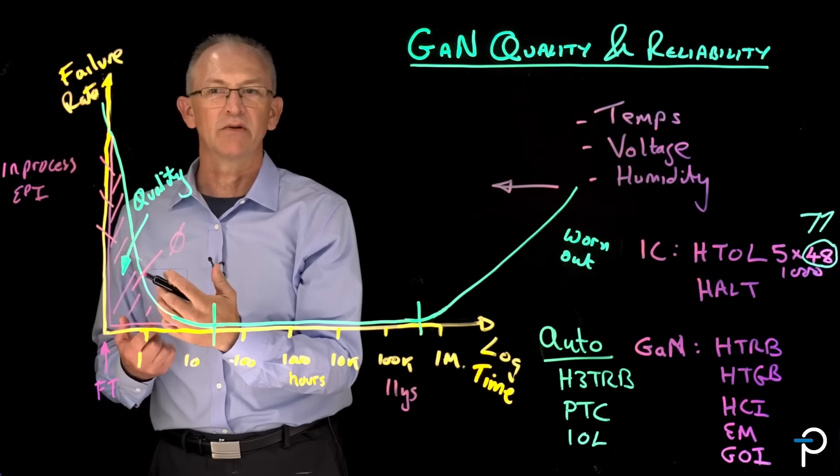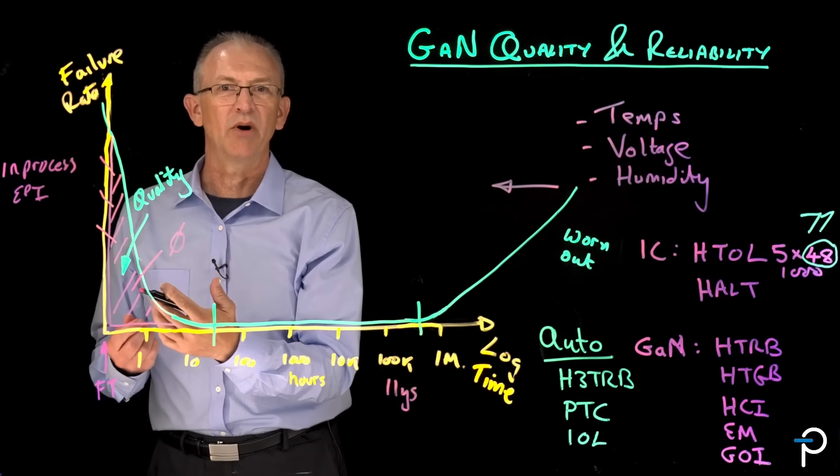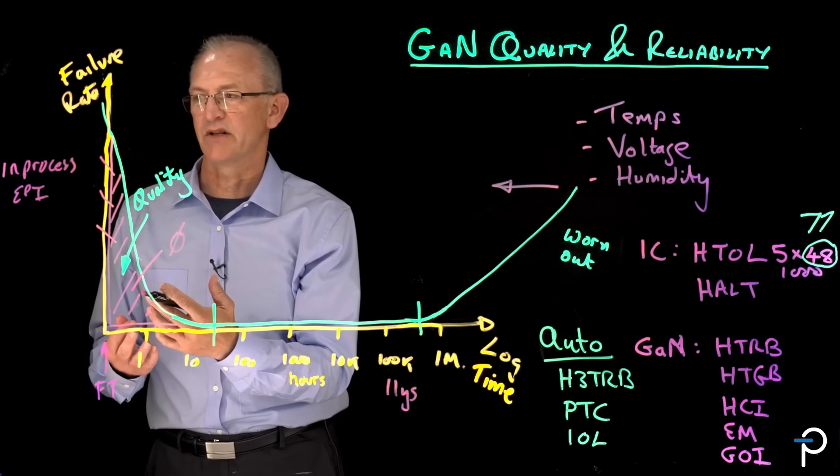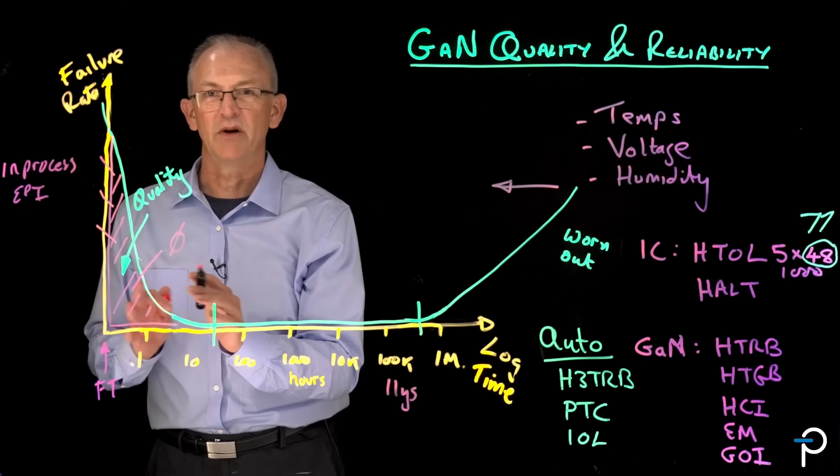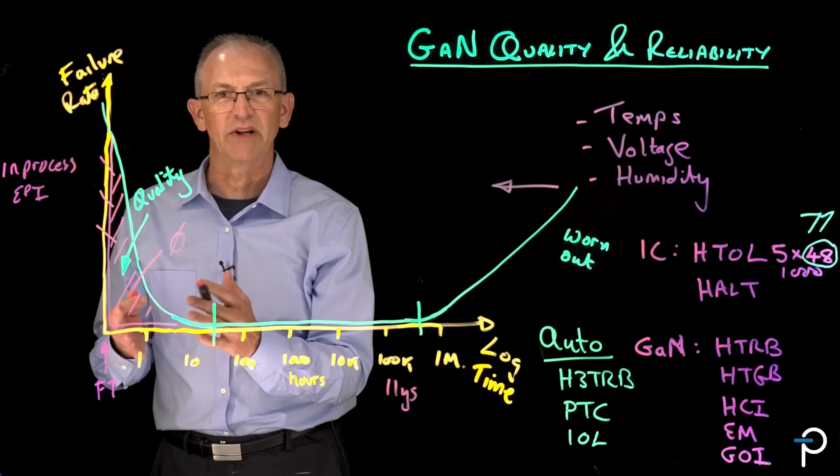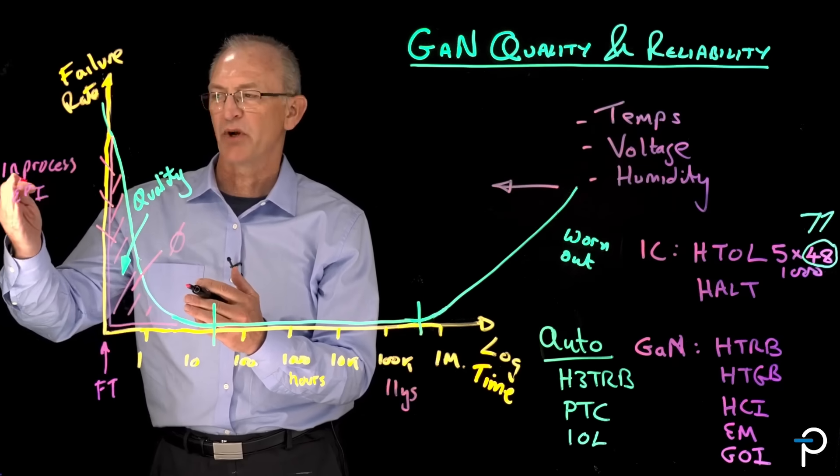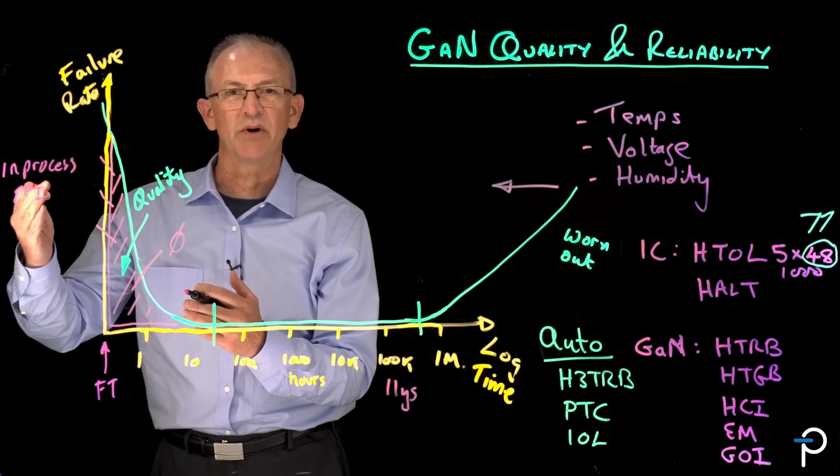EPI is absolutely critical when you build GaN. It's the most important part of generating a GaN transistor. And because we build our own EPI, we don't buy it from a fab. No, we don't buy finished wafers either. We build everything.